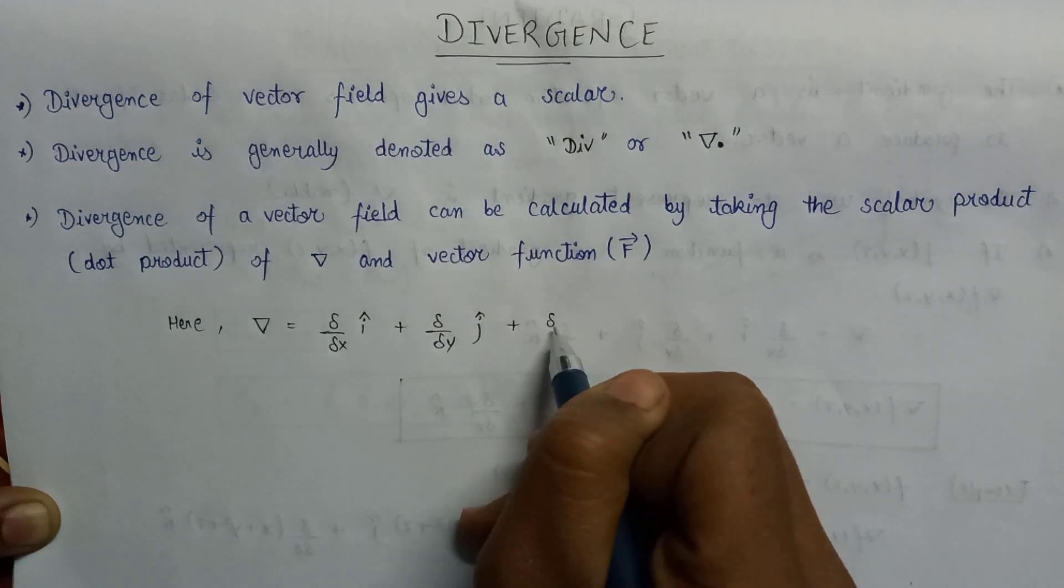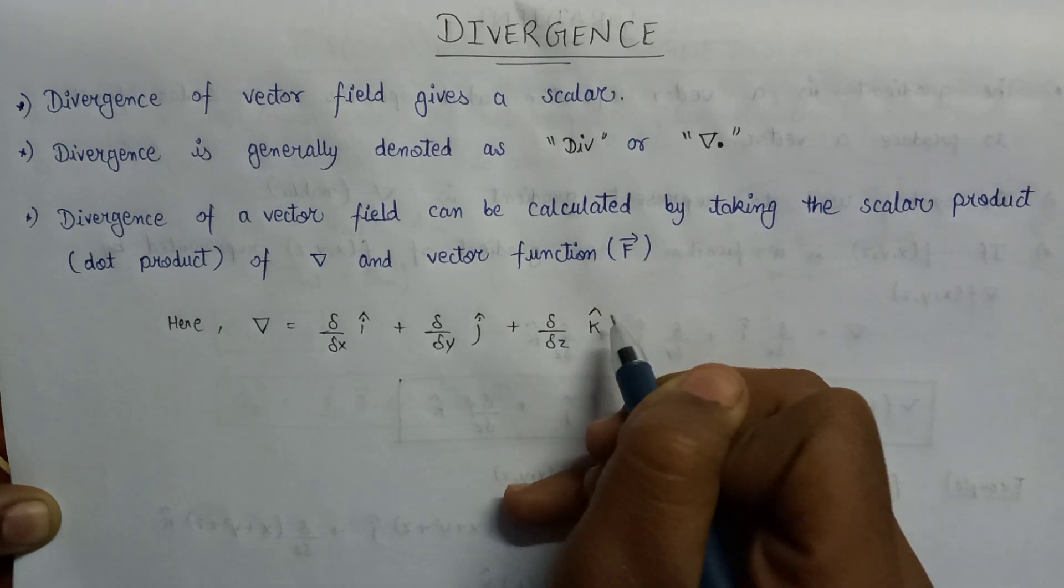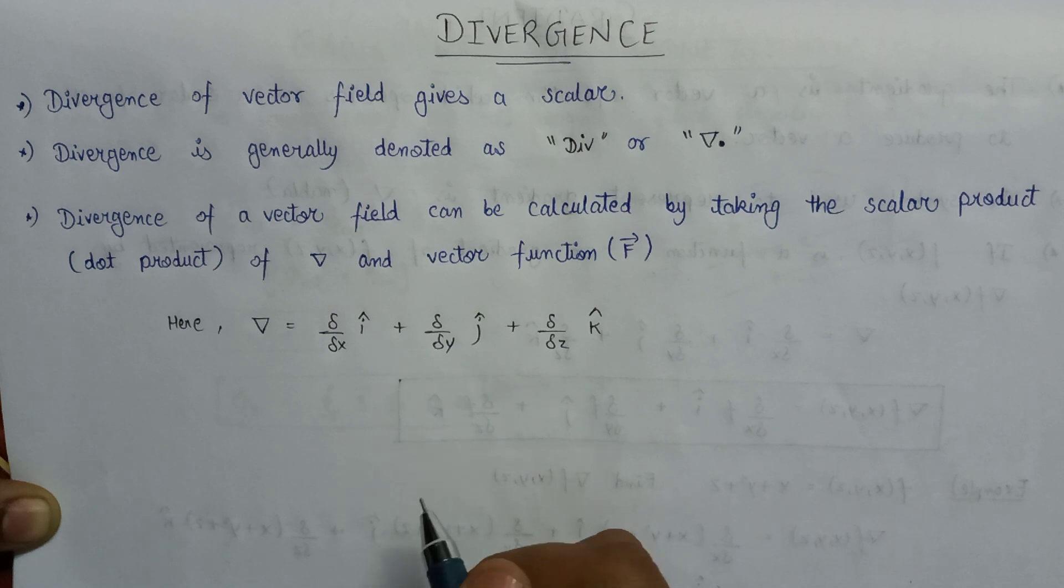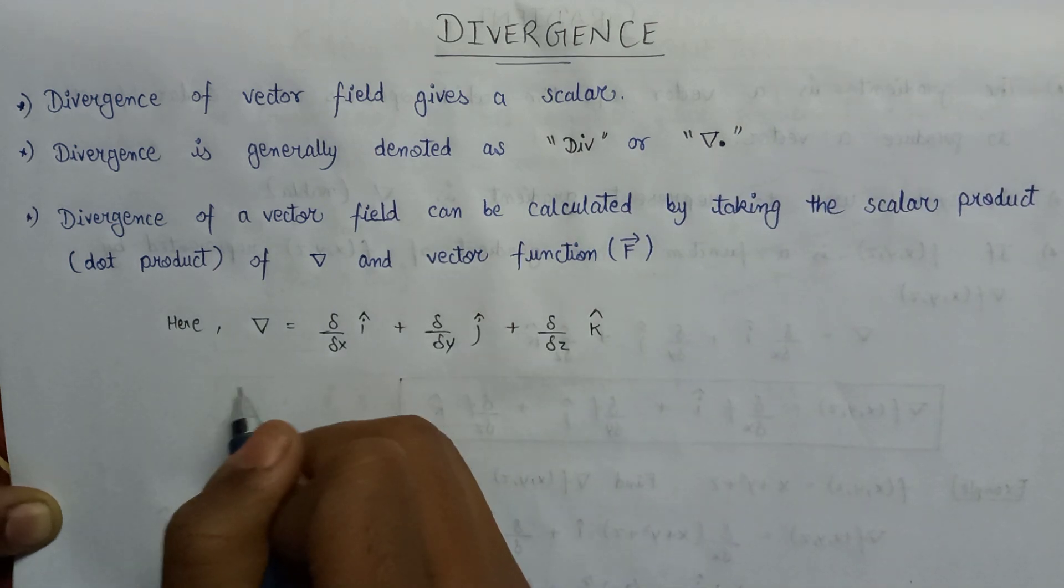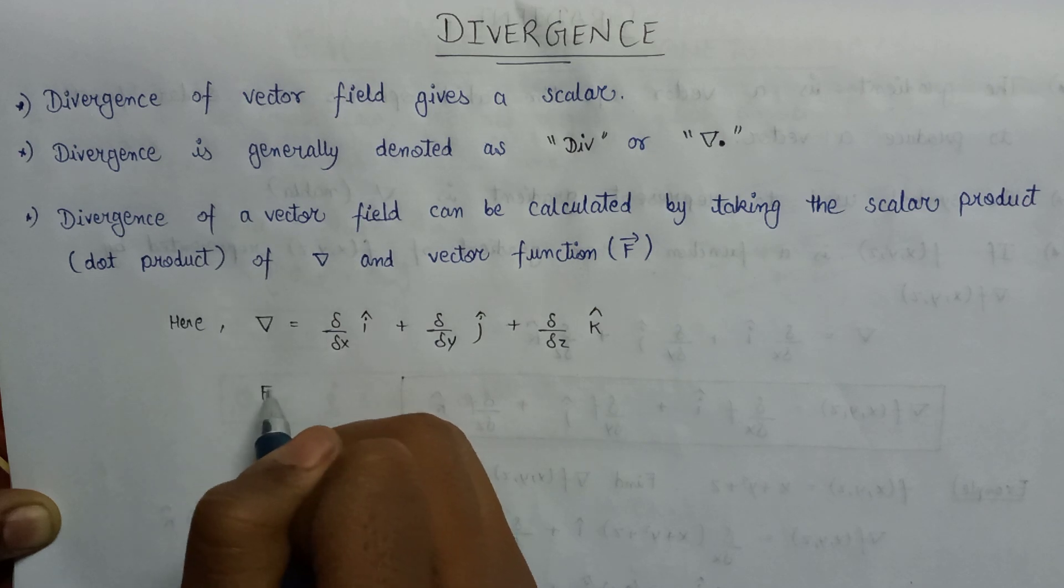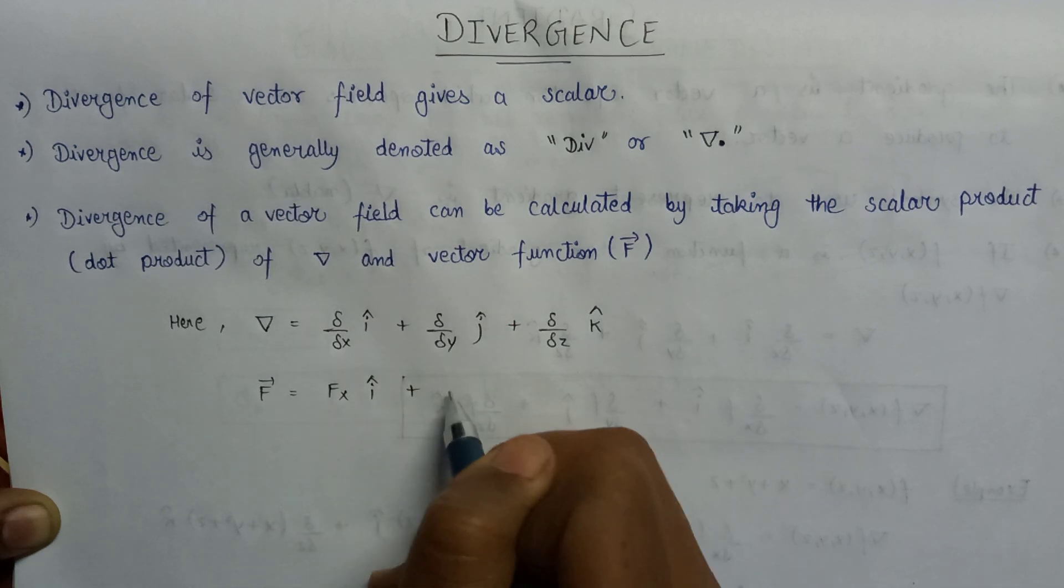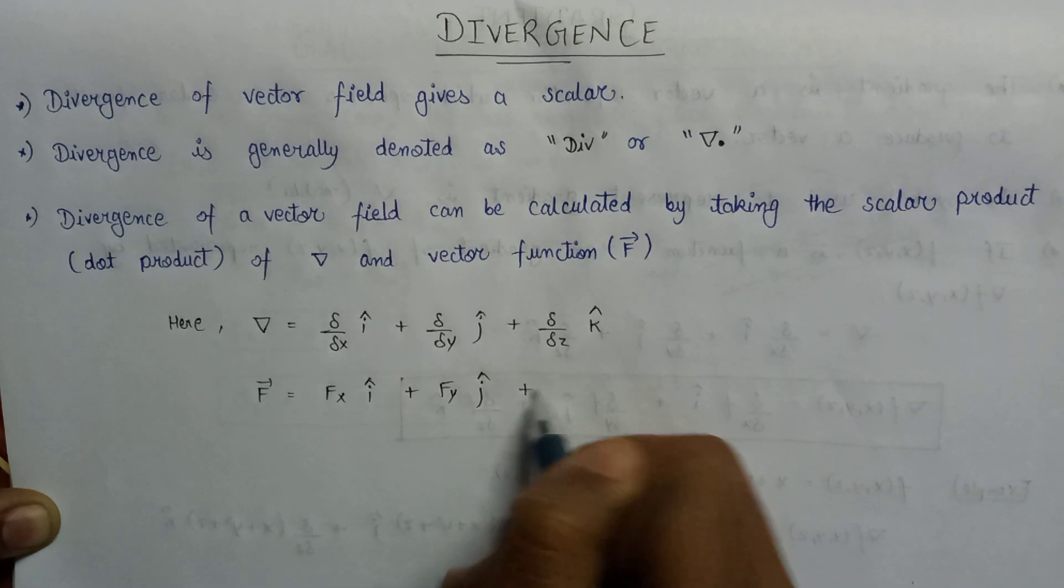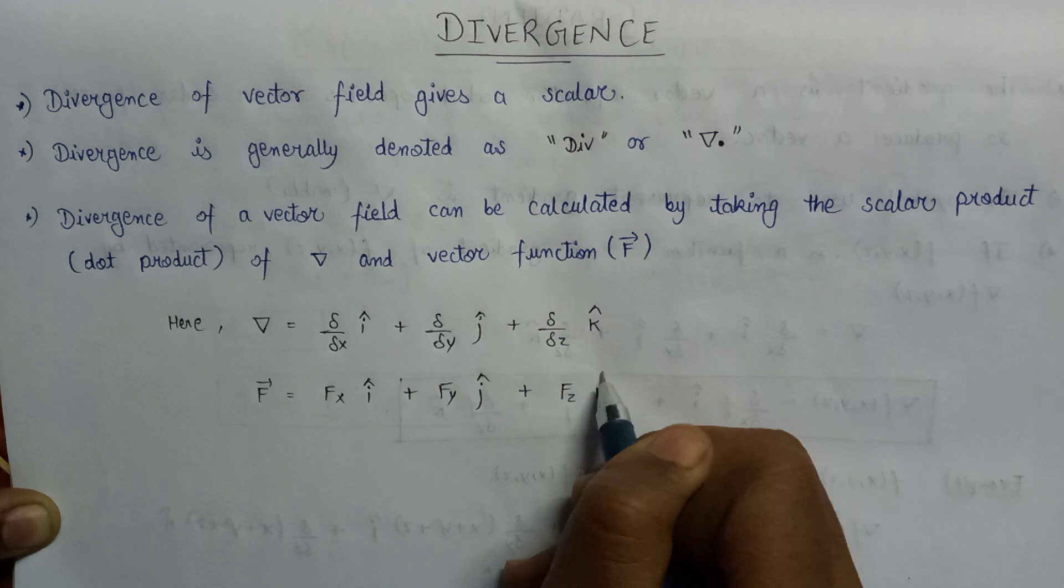Now here is also f vector. The value for the f vector, the vector function, is given as fx into i cap plus fy into j cap plus fz into k cap.